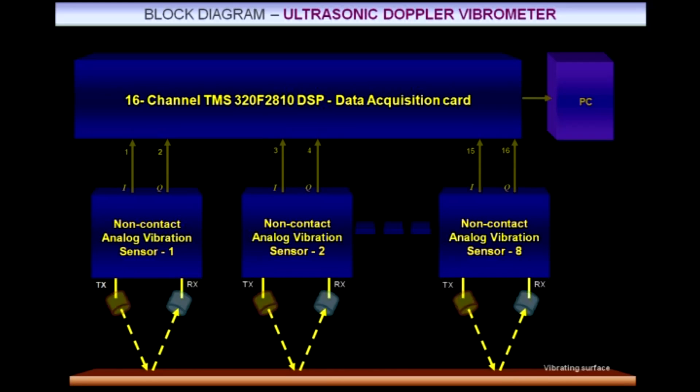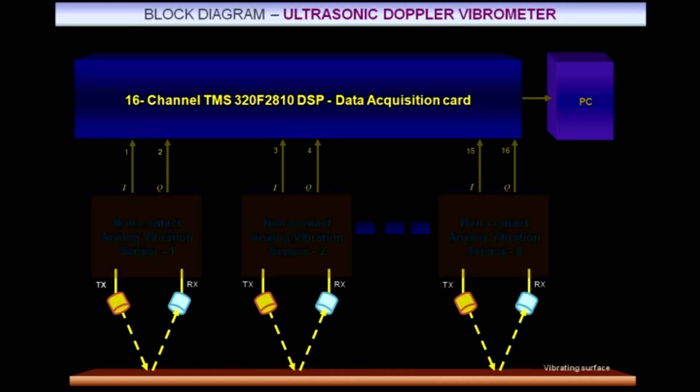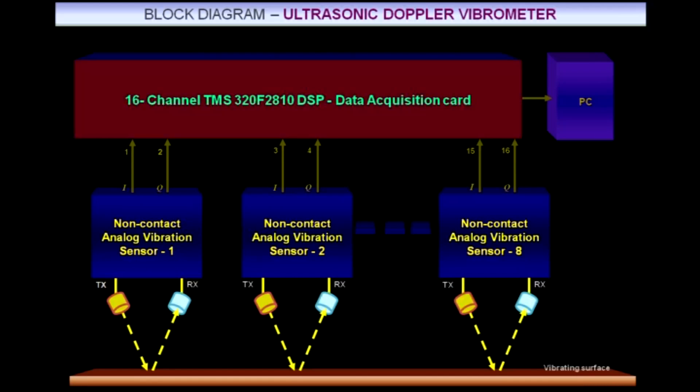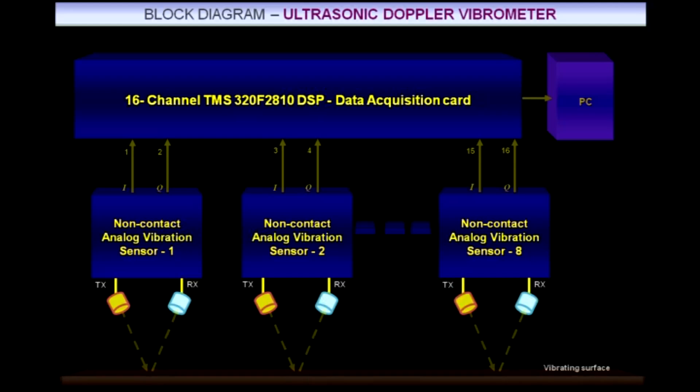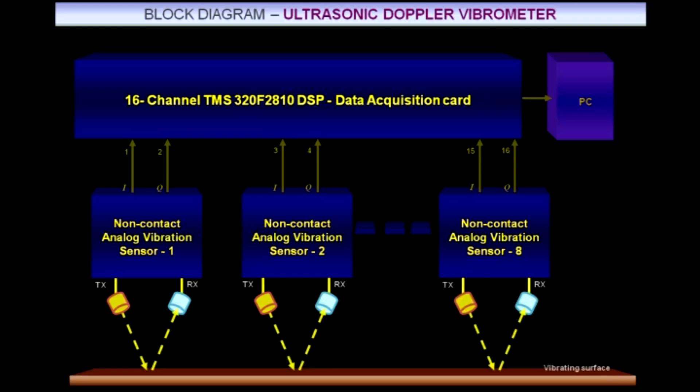The UDV consists of an array of ultrasonic transmit and receive transducers, non-contact analog vibration sensor card, and TMS320F2810 based data acquisition module. The transmitted ultrasonic wave is reflected back from the vibrating target.